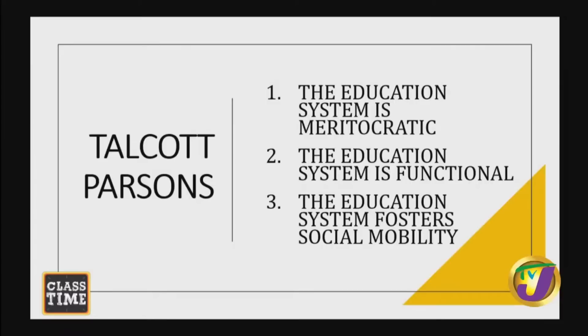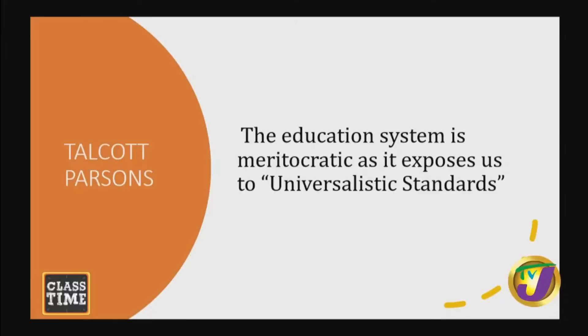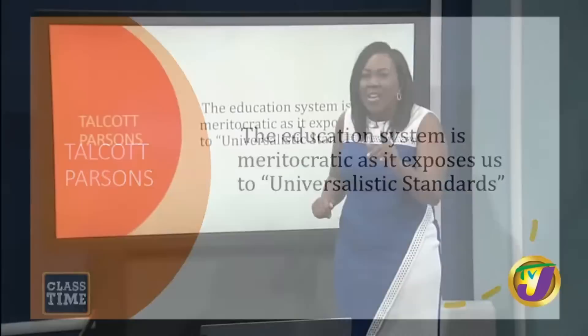The education system is meritocratic. Meritocratic means it is based on merit — meaning you are judged based on what you can do, your talents. So if the system is meritocratic, the system is fair. Talcott Parsons says the system is meritocratic because it exposes everybody to universalistic standards — standards that are applied to everybody regardless of who you are. Whether you're rich or poor, everybody is exposed to the same standards in school, according to Talcott Parsons.